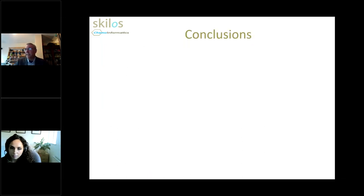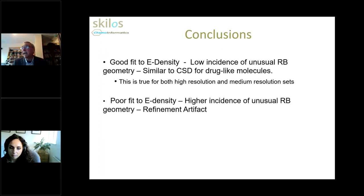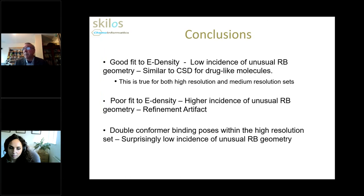Let's draw some conclusions. If we have a good fit to electron density, we have a low incidence of unusual rotatable bond geometry, and this profile is quite similar to the CSD — true for both high and medium resolution sets. For poor fits to electron density, there is a higher incidence of unusual rotatable bond geometry, and arguably this is a refinement artifact that should be discounted if we're looking for strained molecules. Double or multiple conformer binding poses within the high resolution set show a surprisingly low incidence of unusual rotatable bonds.